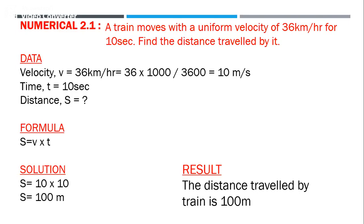To convert 36 km/h to m/s: since kilometer is in the numerator, multiply by 1000 (1 km = 1000 m), and divide by 3600 (1 hour = 60 min × 60 sec = 3600 seconds). So 36 × 1000 ÷ 3600 = 10 m/s.